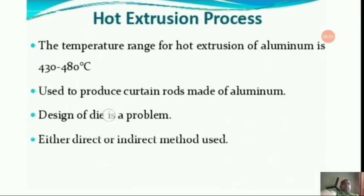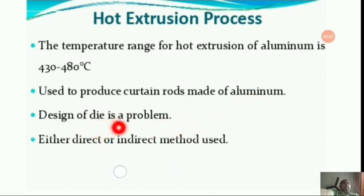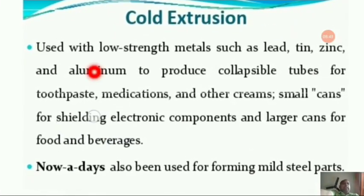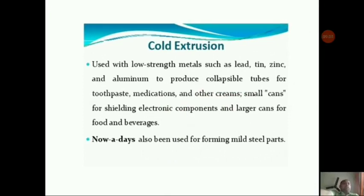For hot extrusion, the temperature range for aluminium — which is widely used — is around 430 to 480 degrees Celsius. Hot extrusion is used to produce carbon rods made of aluminium. Design of the die is a key consideration, and either direct or indirect method can be used. For cold extrusion, it is used with low-strength metals such as lead, tin, zinc, and aluminium to produce collapsible tubes for toothpaste, medications, and other creams. Small cans for shielding electronic components and larger cans for food and beverages are also produced, and it has also been used for forming mild steel parts.